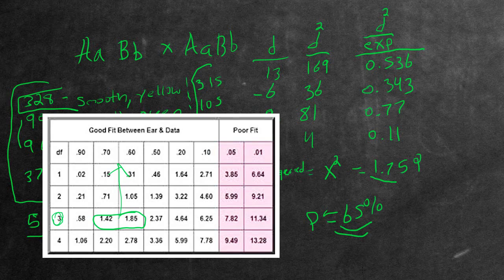So but whenever it's above 5%, like ours is, ours is 65, 60% above 5%, tells us that yes, our observed values are expected and they're the result of like random chance or independent assortment.